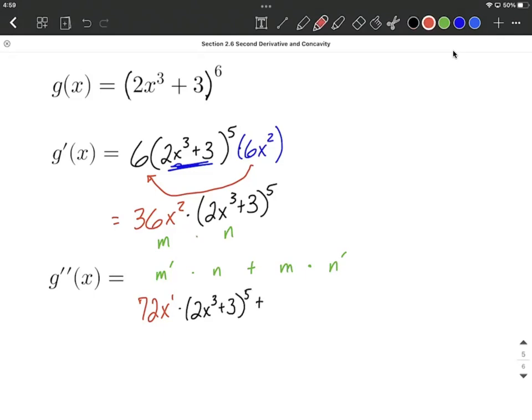Plus, next we bring along m, the first one, the 36 x squared, and now we have to multiply by the derivative of that 2 x cubed plus 3, all raised to the fifth power. This is back to just like our first derivative, we're going to have to use the chain rule to do so.